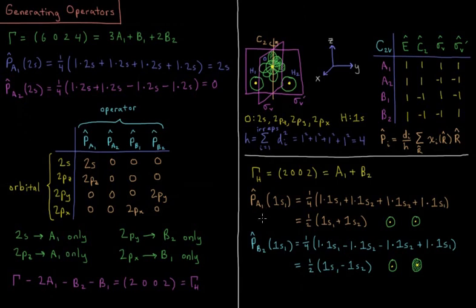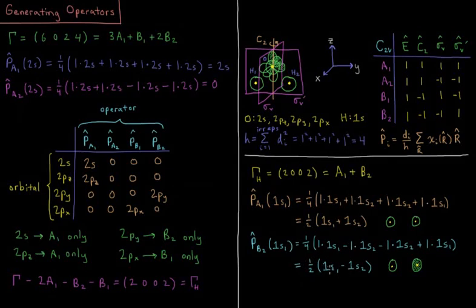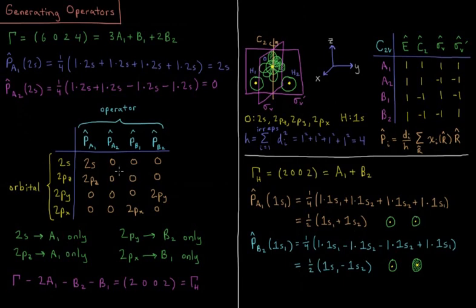Applying the B2 projection operator gives 1·1s1 − 1·1s2 − 1·1s2 + 1·1s1, which equals one-half (1s1 − 1s2). This is the antisymmetric combination — equal in magnitude but with opposite phase. So we now have accounted for the A1 symmetric combination and the B2 antisymmetric combination of the hydrogen 1S orbitals, completing our molecular orbital set for water.